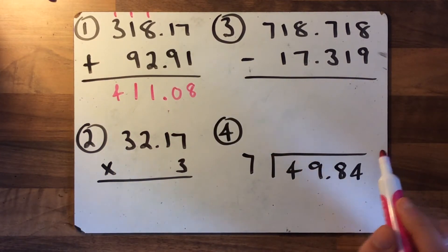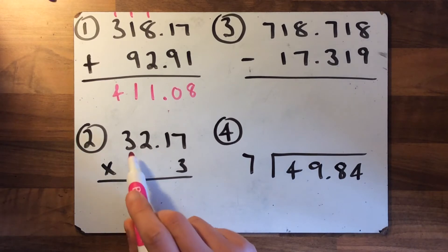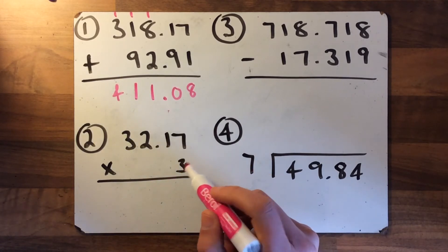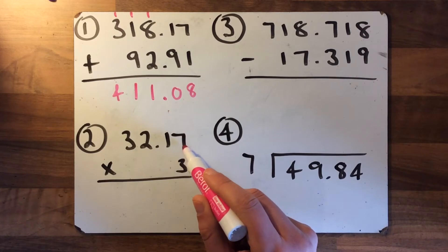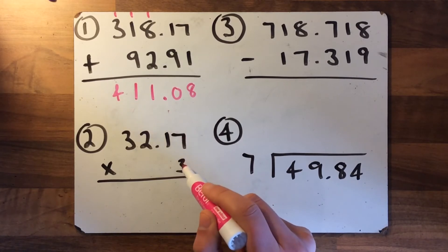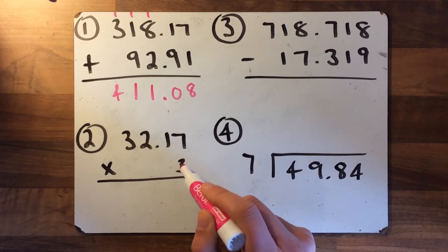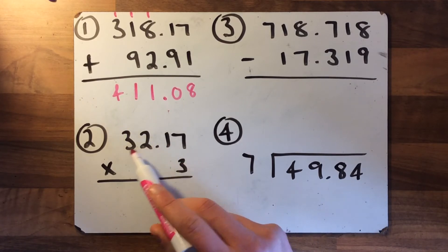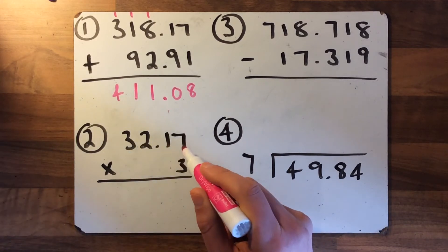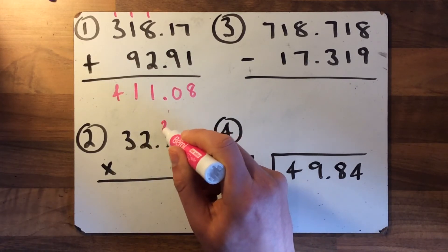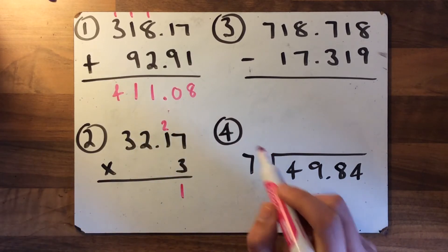Moving on to number two: 32.17 times by three, so 32.17 is getting three times bigger. So first of all we multiply this seven that is in the hundredth column, then multiply this one that's in the tenths column, multiply them by three, then move on to the ones, then move on to the tens. Seven times by three is twenty-one, so the one goes here and the two goes over into the tenths column.